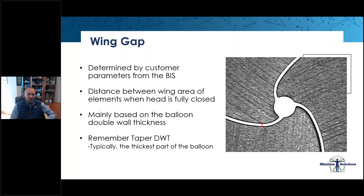Wing gap is another critical parameter for repeatable and optimal performance. It comes from the balloon information sheet and is the distance between the two wing areas when the elements are at full close — the small red arrow seen about a third of the way up the left wing gap. This design parameter is based around the double wall thickness of the balloon. The double wall thickness can be greatest in the taper section of the balloon, so make sure to take that taper thickness into consideration when reporting that measurement. When designing the wing gap, we want to close the pleat head as tightly as possible to that double wall thickness to create a very uniform and non-wrinkled pleat, but without over-closing and pinching the balloon material.